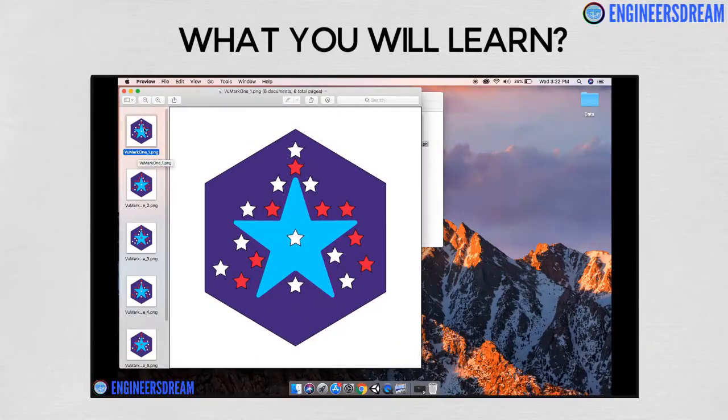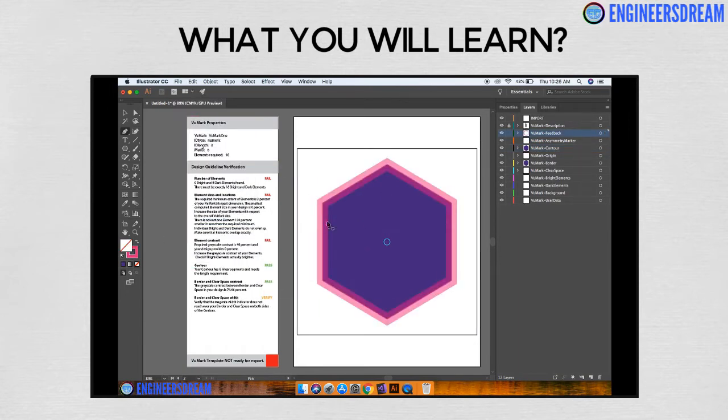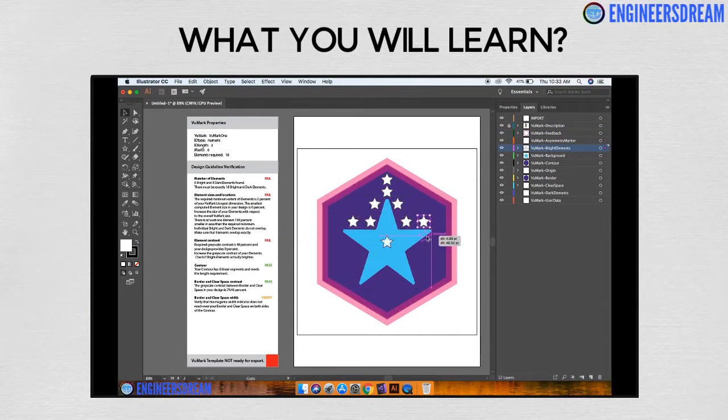Next we will look at a unique feature of Vuforia called Vumark which is Vuforia's very own QR code technology. In this section, we will first design a Vumark template which will contain information of different Vumark image targets. Once these Vumark image targets are detected, we will place different game objects around them.